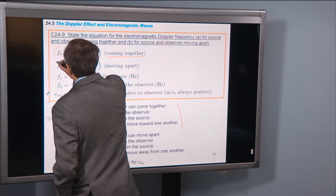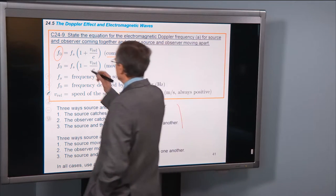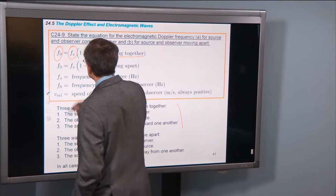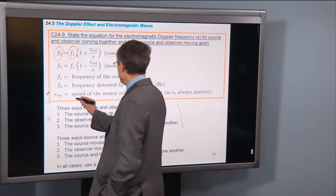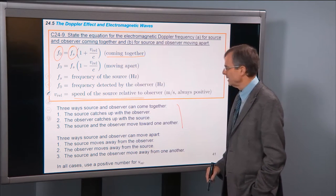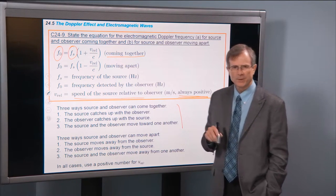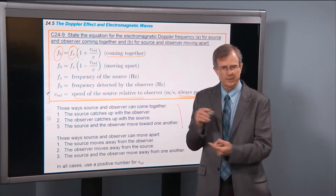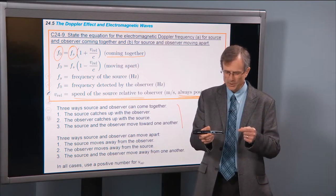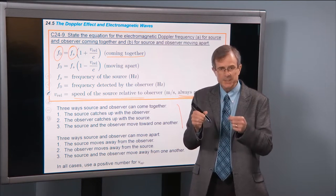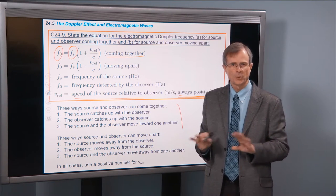The observed frequency is equal to the frequency of the source times 1 plus v_relative over c, where v_relative is the speed of the source relative to the observer. This is always going to be a positive number, so you never have to worry about the relative speed being positive or negative. It's always a positive number.